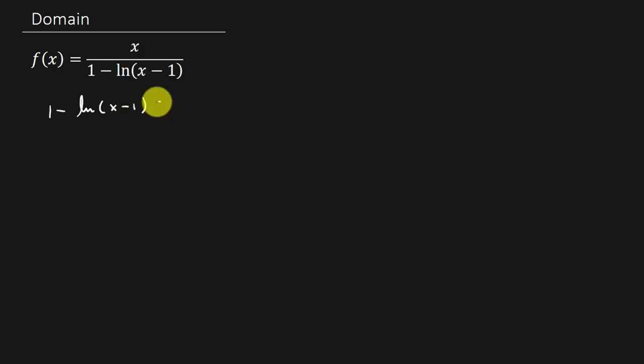So we want to find out when does this thing equal zero. So if I add natural log x minus 1 to both sides, that's going to give me natural log x minus 1. So it would be natural log x minus 1 equals 1.